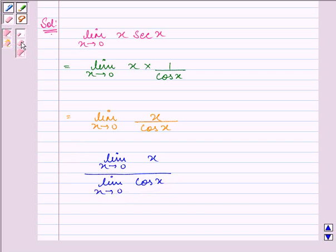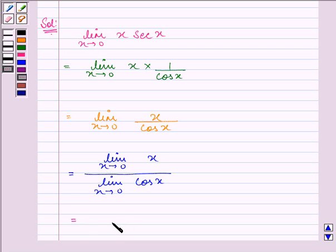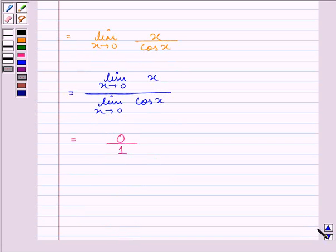Now we have studied in the key idea above that limit x approaches 0, cos x is equal to 1. So on taking the limits we have 0 upon 1 which is equal to 0.